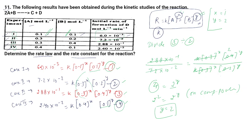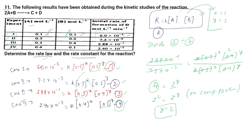So the rate law for question 4.11 is: rate = k[A]¹[B]², or rate = k[A][B]². We do not need to write the exponent 1 explicitly. This completes part 1, determining the rate law.